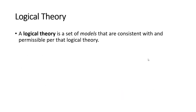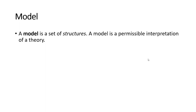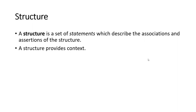A logical theory is a set of models that are consistent with — that are permissible per — the logical theory. A model is a set of structures; a model is a permissible interpretation of a theory. A structure is a set of statements which describes the associations and assertions of the structure, so a structure basically provides context. All these things will make sense in a little bit — I'm just trying to show you these building blocks.